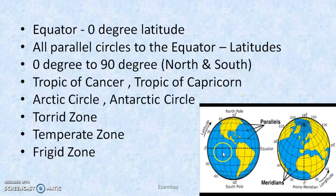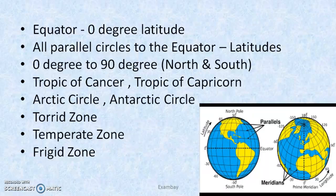The parallel lines are all latitudes. Equator is zero degree latitude. Tropic of Cancer is 23.5 degrees north, Tropic of Capricorn is 23.5 degrees south. Tropic of Cancer passes near India. Arctic Circle is 66.5 degrees north, and Antarctic Circle is 66.5 degrees south. These are all latitudes. As we go farther from the equator towards the poles — which are 90 degrees — temperature keeps decreasing.